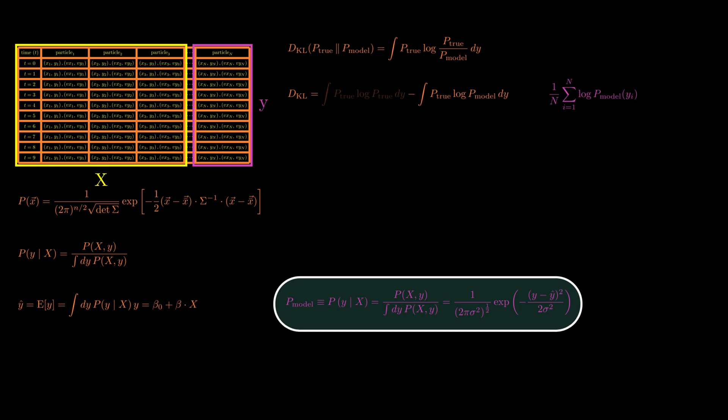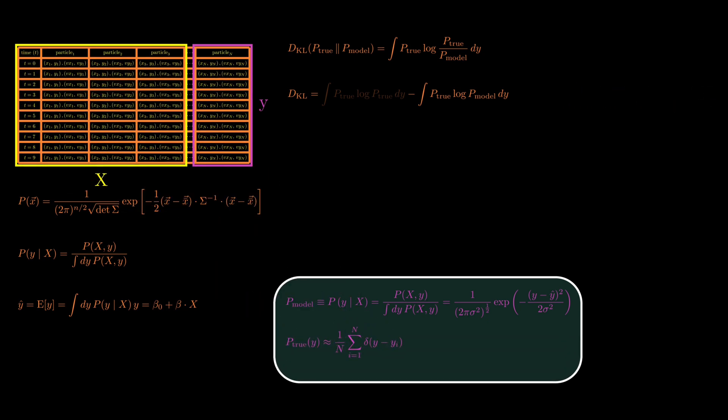To make this practical, we estimate the true distribution from our dataset by using delta functions centered at each data point. When substituted into the integral, the delta functions turn the expression into a sum over the log of our model's predicted probabilities at each observed Y value. This gives us the log likelihood function.